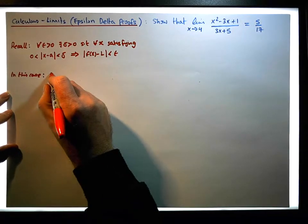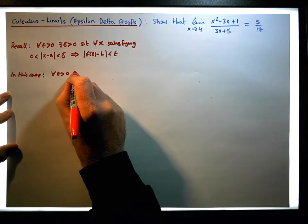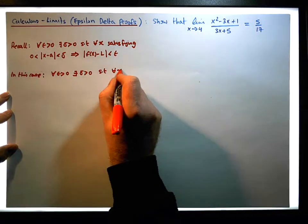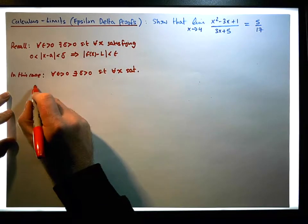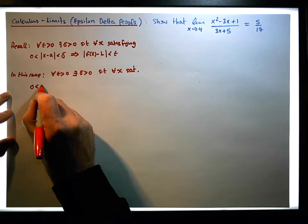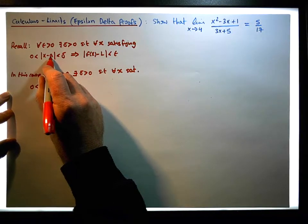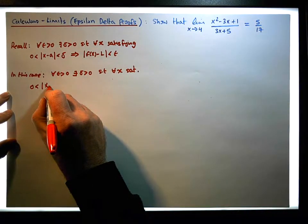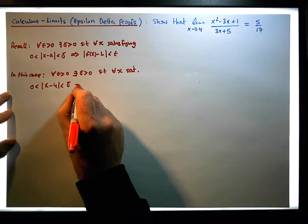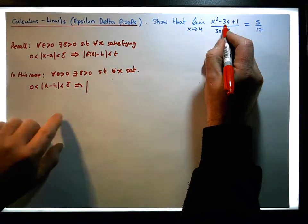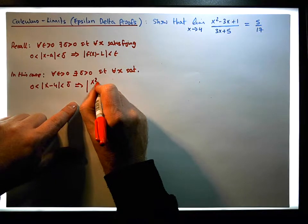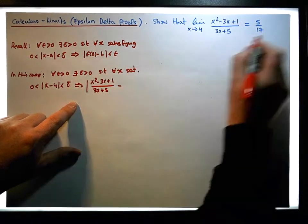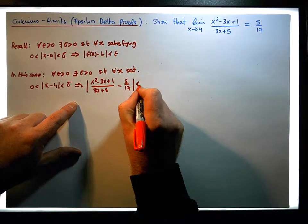In this particular case, what we need to show is that for each and every epsilon greater than 0, there exists a delta greater than 0, such that for each and every x satisfying the condition that 0 is less than the absolute value of x minus a. The limit is tending to 4, so a is 4, so x minus 4 is less than delta. From that fact we can imply that x squared minus 3x plus 1 all over 3x plus 5, minus its limit minus 5 over 17, is in fact less than epsilon.